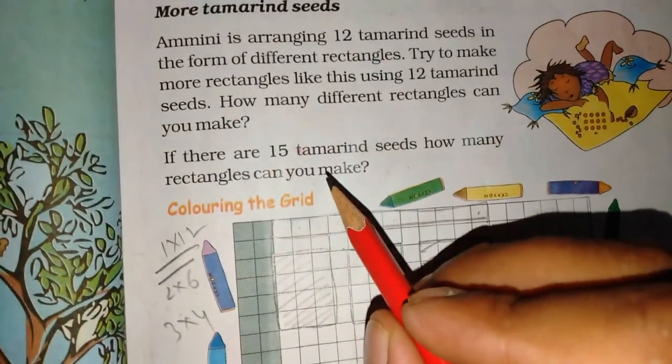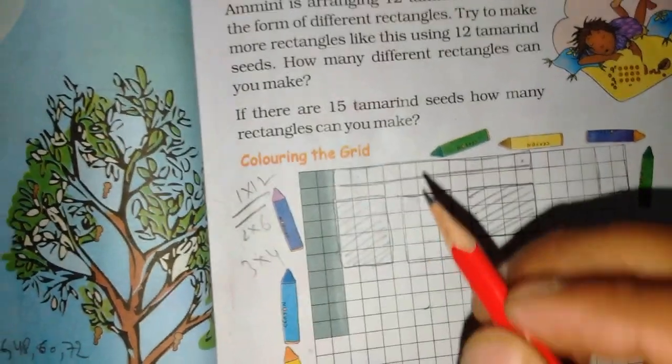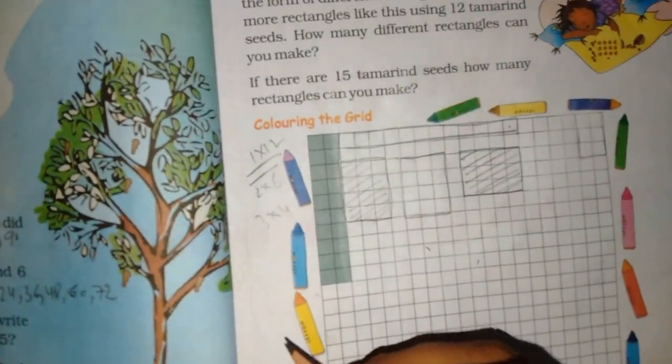If there are 15 tamarind seeds, how many rectangles can we make? If you have 15, how many times do we have to try out? 5?